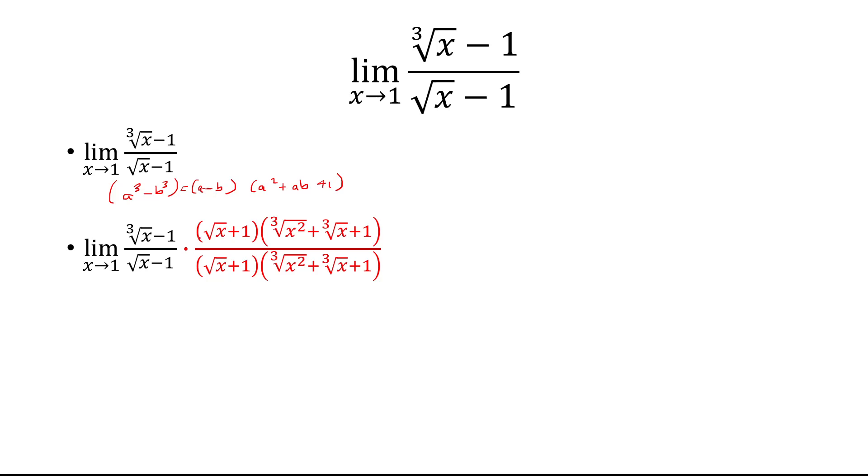But okay, so at this point, this is my a, this is my b, and this is my a squared, ab, and 1. So that's going to give me a cubed minus b cubed, which will just be x minus 1.